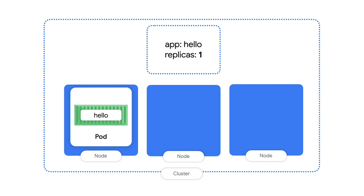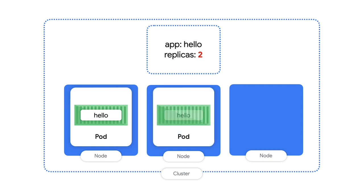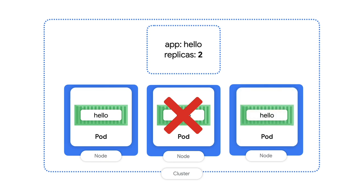A deployment is an abstraction that manages the lifecycle of an application. I can set the desired number of app instances for the deployment to manage, and then it will make sure the correct number of instances, or replicas, are running. So if we increase the number of replicas that we want, the deployment will see that there's currently not enough replicas and spin up another one. That even works when a node crashes — if the node goes down, the current state is once again different from the desired state, and Kubernetes will schedule another replica for us.